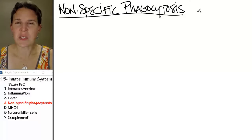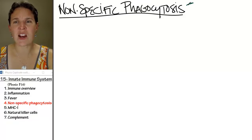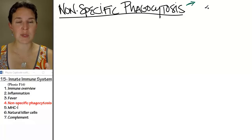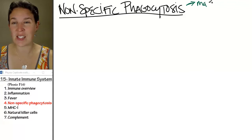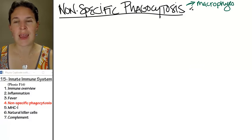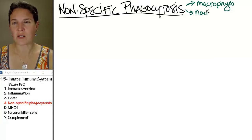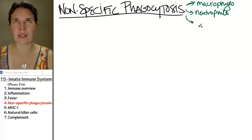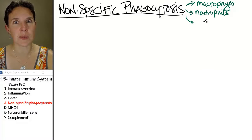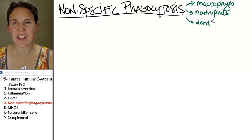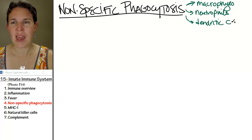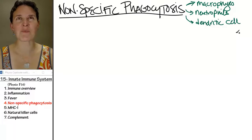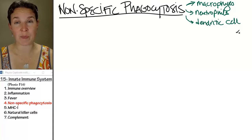Nonspecific phagocytosis is carried out by three main types of cells: macrophages — this shouldn't surprise you — neutrophils, which are white blood cells, and the last nonspecific phagocyte is the dendritic cell. My impression is that dendritic cells are white blood cells.